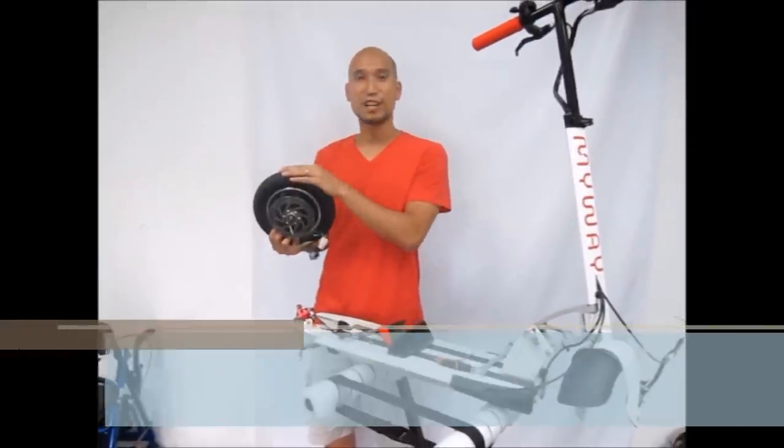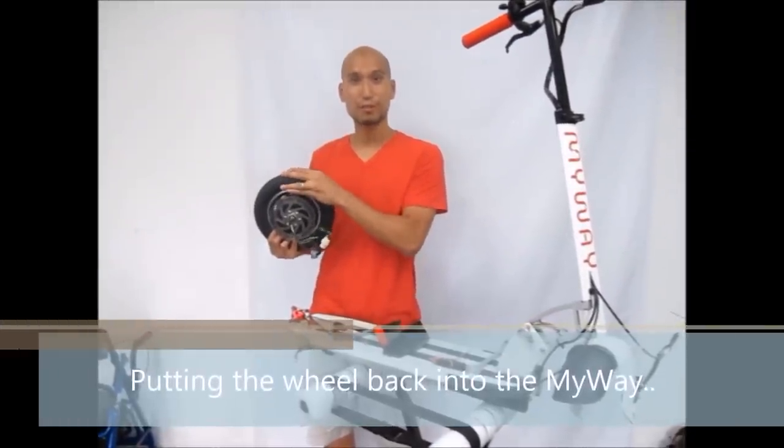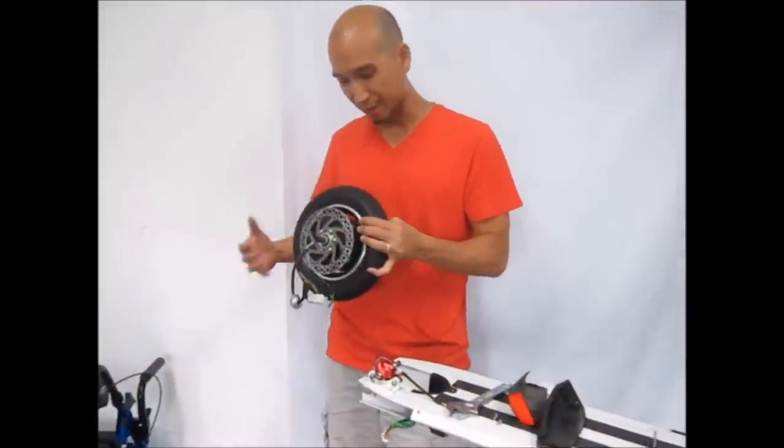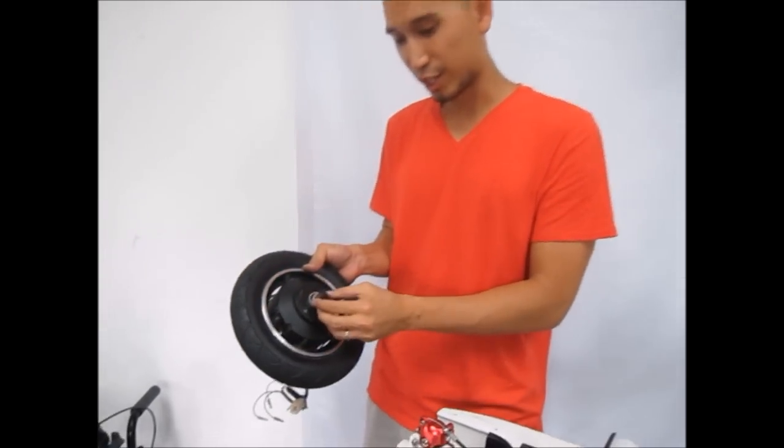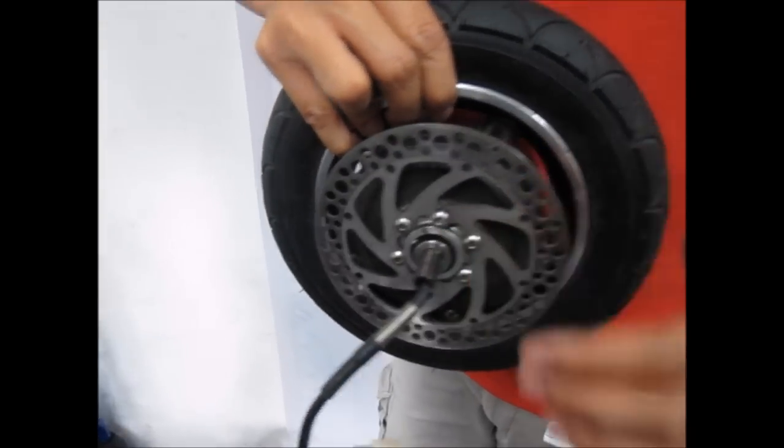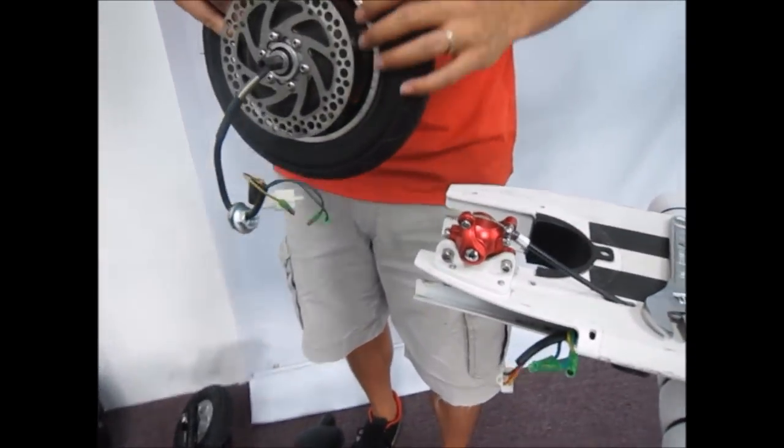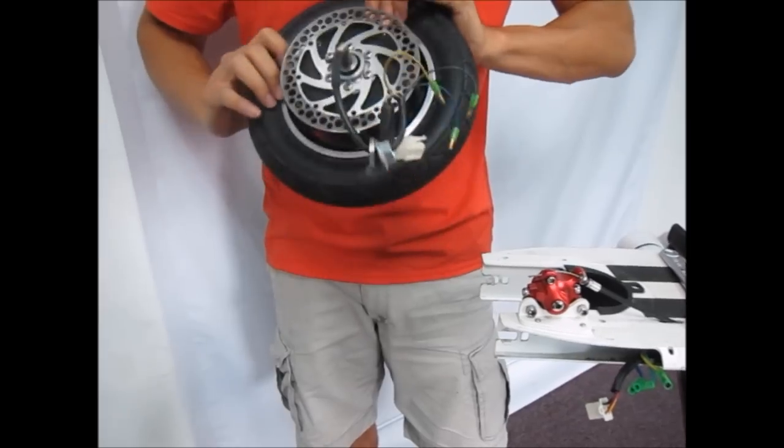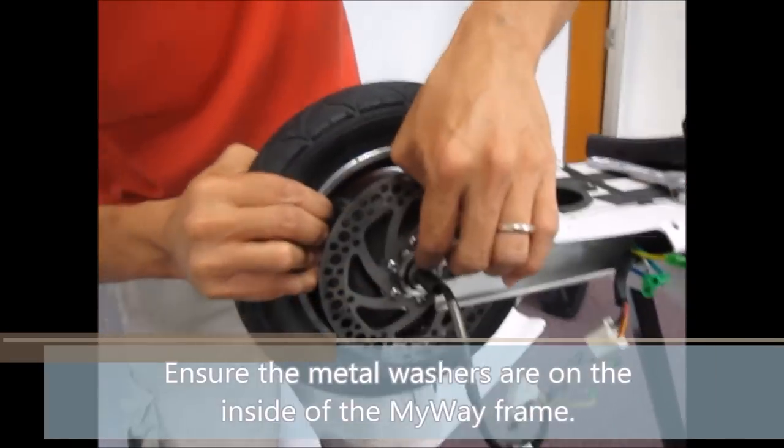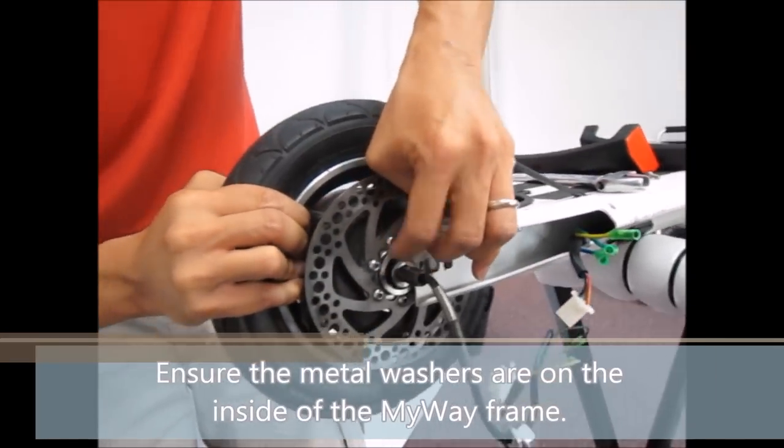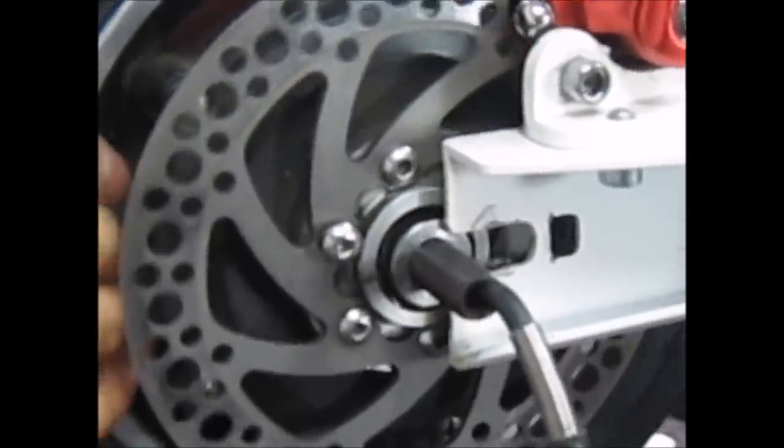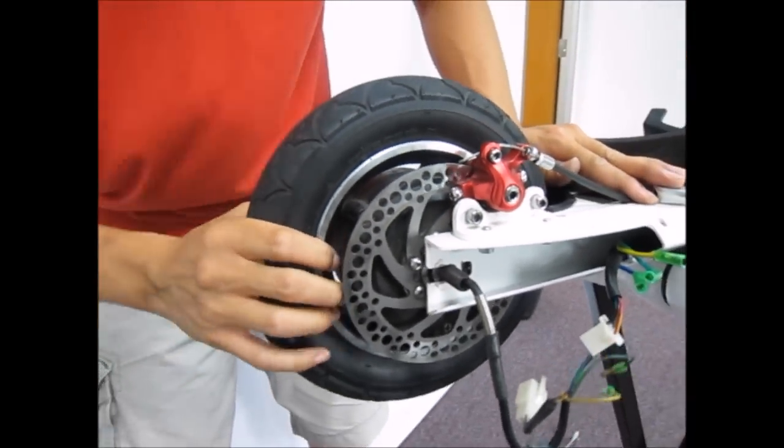So once you're done changing the tire or changing the tube out of the rear wheel, it's time to put it back in. Real simple, just do everything in reverse. First, make sure the washers that you see here on both sides are on the inside of the slot. So they should be closer to the wheel than the outside of the frame. It's going to be a tight fit. Slot it back in.